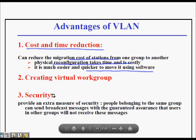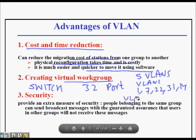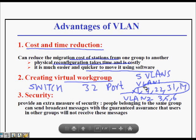If a switch has 32 ports, you can create up to 5 VLANs and configure them accordingly. For example, VLAN 1 can have port numbers 1, 7, 22, 31, and 14; VLAN 2 can have ports 3, 5, and 6. Any packet sent by port 22 will only reach ports 1, 7, 31, and 14. VLAN also provides security: people in the same group can send broadcast messages with the assurance that users in other groups will not receive them.